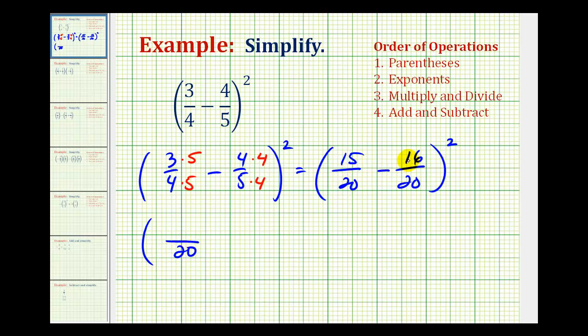And then fifteen minus sixteen is the same as fifteen plus negative sixteen. So this difference is equal to negative one. So this fraction is negative one-twentieth squared.